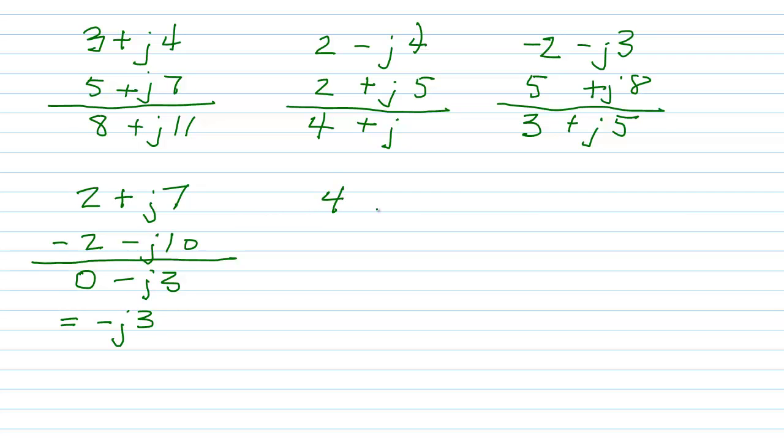4 minus J6 plus 7 plus J6 equals 4 plus 7 is 11, and minus J6 plus J6 is J0, which equals the pure real number 11. Remember,